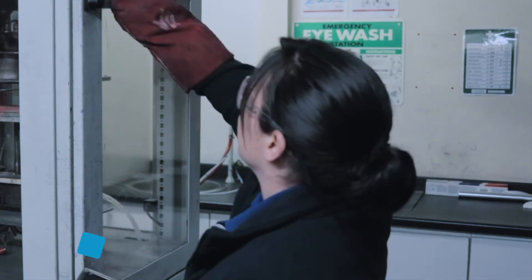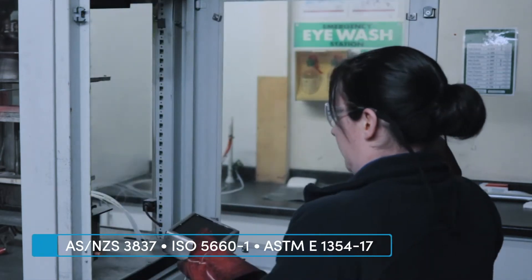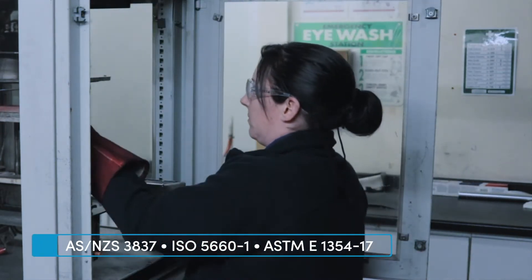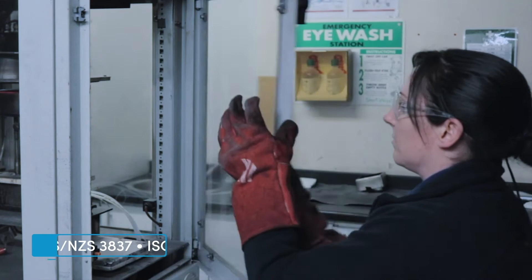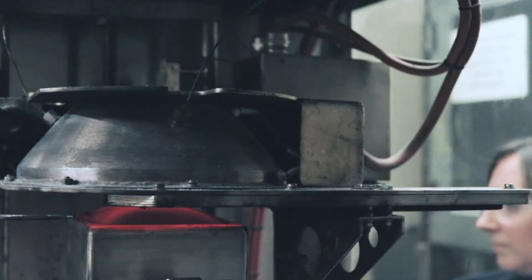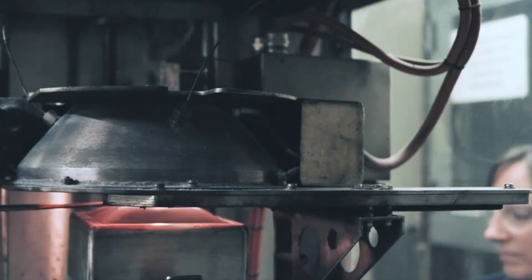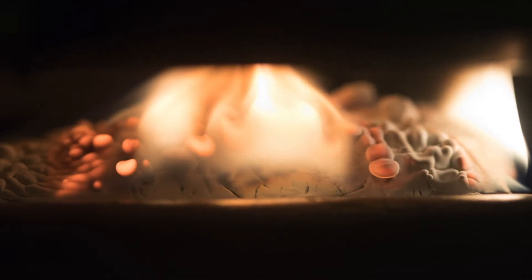The AS NZS 3837 ISO 5660-1 or ASTM E1354-17 is a small scale calorimetry test. It is one of the most versatile bench scale instruments for measuring the reaction to fire properties of combustible materials, and in Australia it is often used to predict group numbers in accordance with AS 5637 part 1.